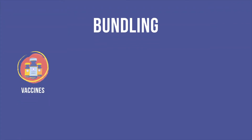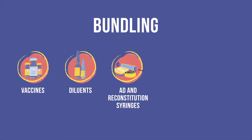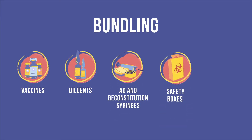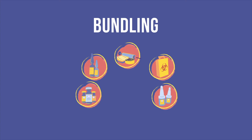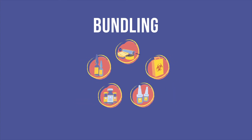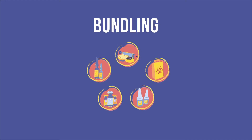Bundling includes vaccines, diluents, AD and reconstitution syringes, safety boxes, and any droppers for oral vaccines. Each item must be considered as part of a bundle containing the others. Note that this does not necessarily mean that items are actually packaged together in the same container.